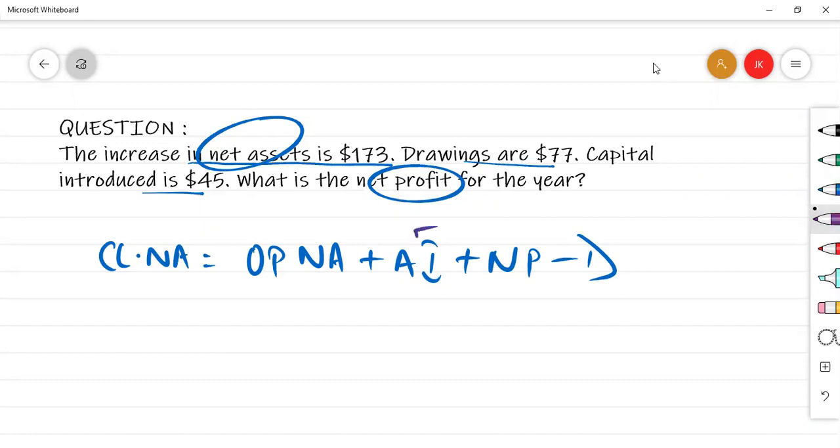Additional investment is given. Drawings amount is given here. Net profit, I have to find out. But now, opening and closing net assets are not given.